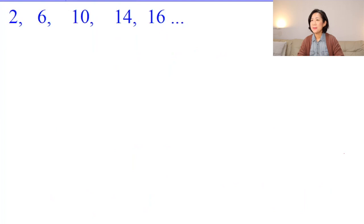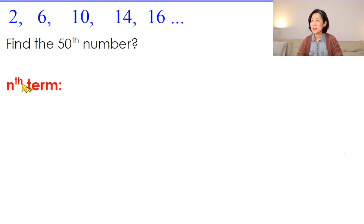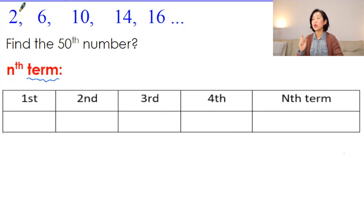Now here is a pattern. If I ask you to find the 50th number, are you going to write down all the numbers up to the 50th? That's not a good idea. So to find any term, I'm going to introduce a new concept: the nth term. Whenever you see nth term, that means it's a formula for the sequence. The nth term helps you find any number in the sequence without having to go up from one term to the next.